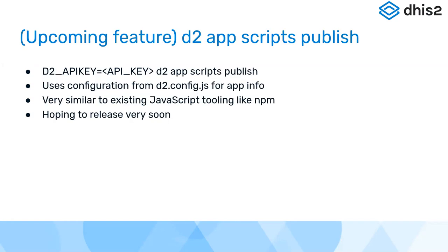This API key is very important for the upcoming feature of publishing through the d2 utility. You'll just be providing that API key as an environment variable to the script, and that will allow the script to talk to the App Hub directly without having to use the web interface, making it much easier to integrate with a pipeline.